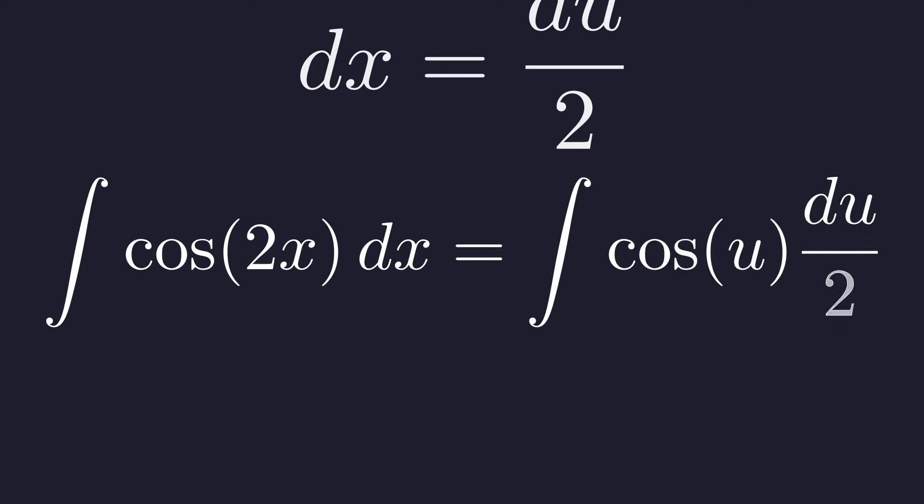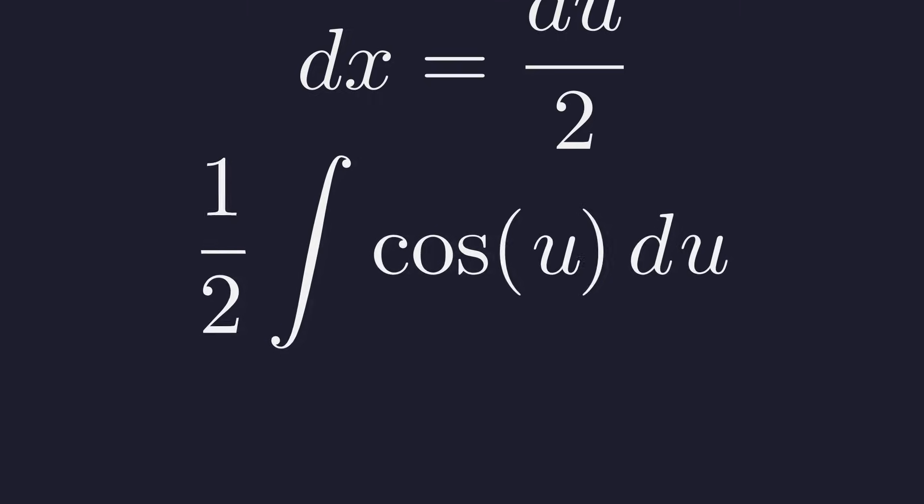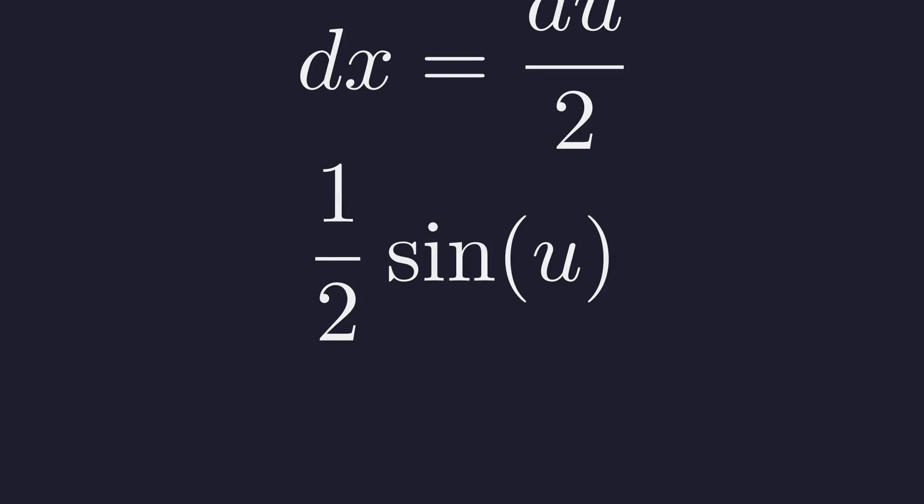Now we substitute u and dx back into our integral. The integral of cosine of 2x dx becomes the integral of cosine of u times du over 2. We pull the constant one half outside the integral. The integral of cosine of u is sine of u. So we have one half sine of u. The final step is to substitute back our original expression for u. Since u equals 2x, the result is one half sine of 2x.